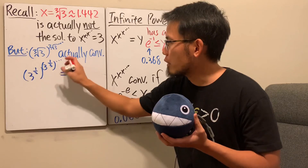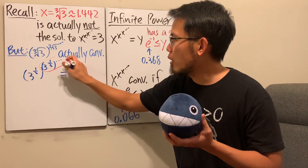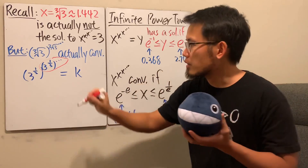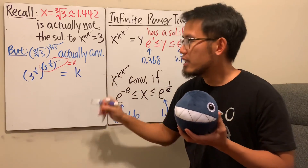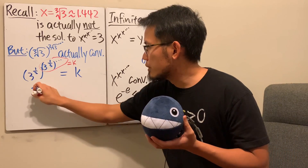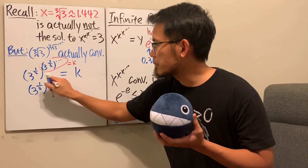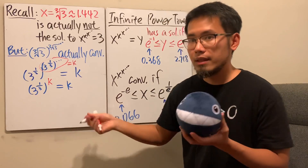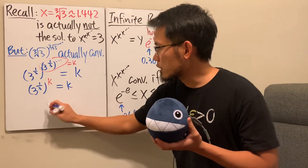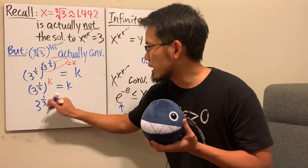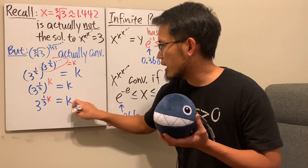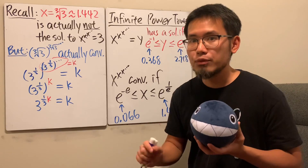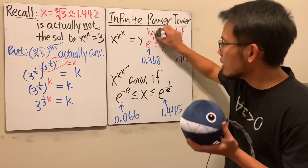Now, since the tower is cube-root-of-3 repeated infinitely, the inner portion starting from any point is still the same tower, which equals k. So we have 3^(1/3) raised to the k-th power equals k. Multiplying the exponents gives 3^(k/3) = k. Since k appears both as an exponent and as a base, we need the Lambert W function to solve this.